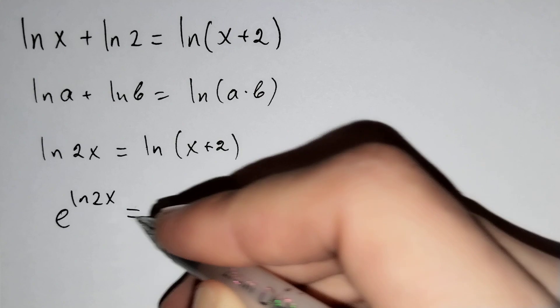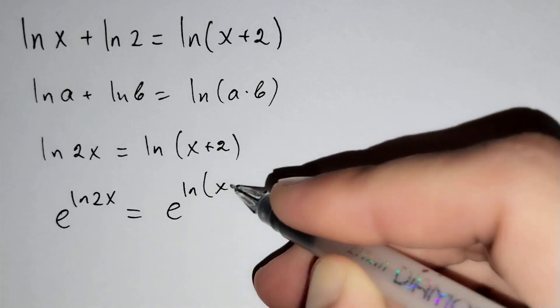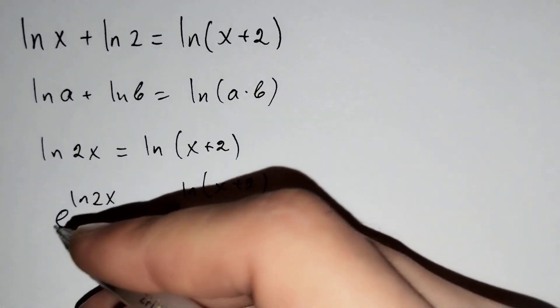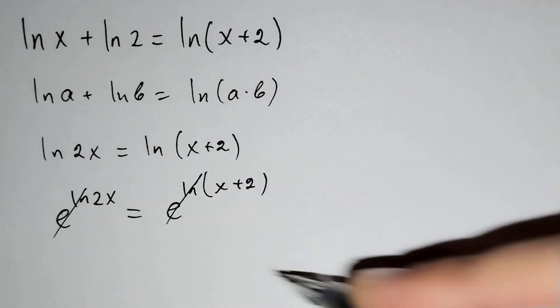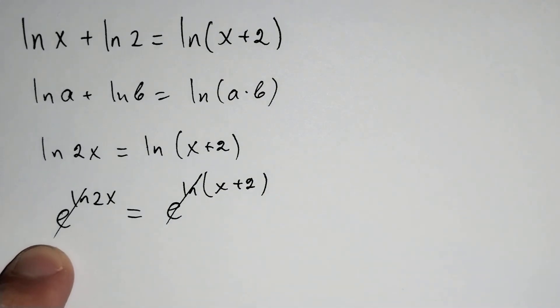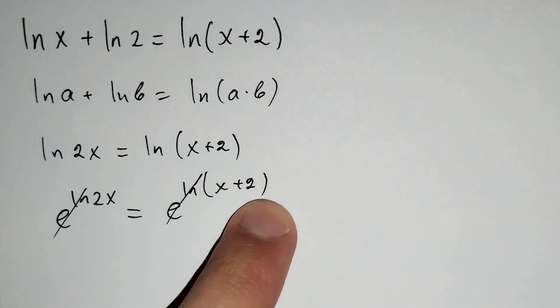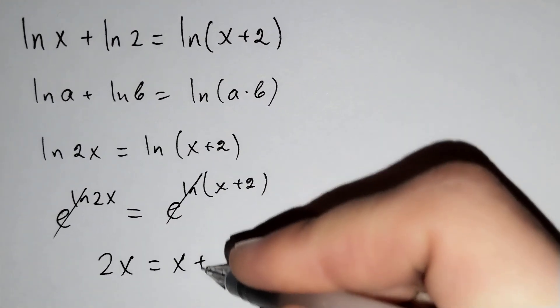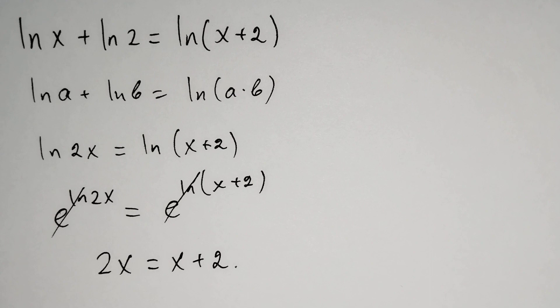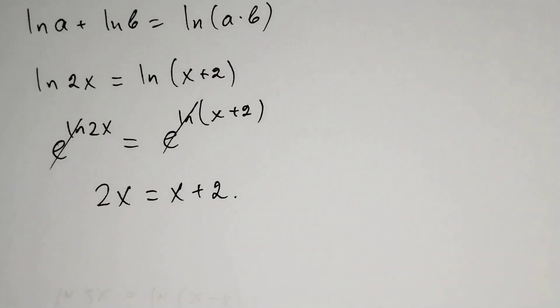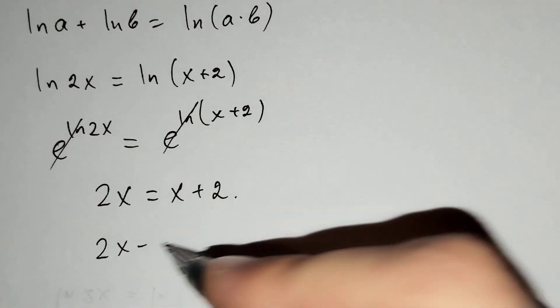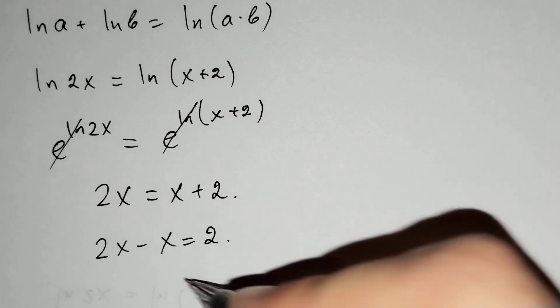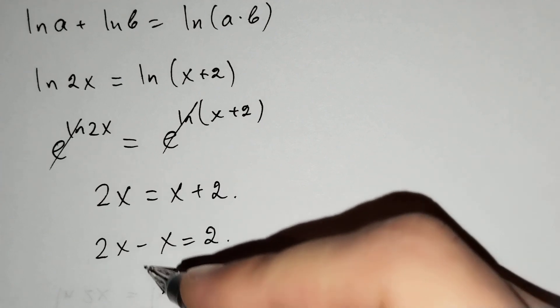ln 2x equals ln of x plus 2. The natural logarithm cancels, and 2x equals x plus 2. 2x equals x plus 2, and if we find x from here, 2x minus x equals 2 and x equals 2.